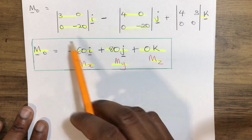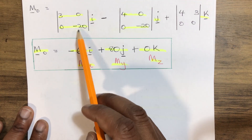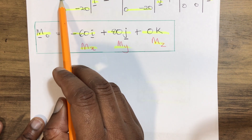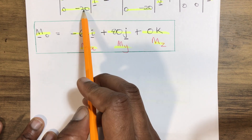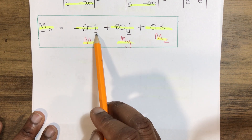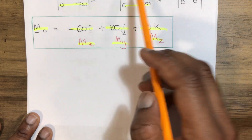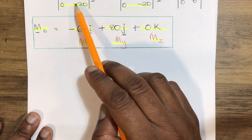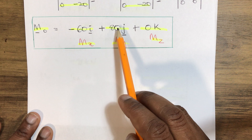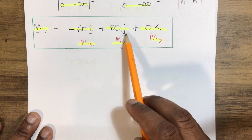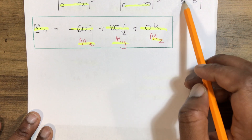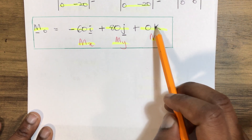Solving: 3 multiplied by −20 gives −60 for the I component; 4 multiplied by −20 gives −80, and negating gives +80 for the J component; and 0 times 4 minus 0 times 3 gives 0 for the K component.